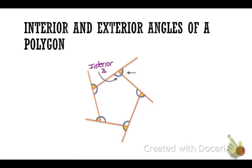The interior angles of a polygon are all of the angles inside the polygon, like the ones that I've highlighted in yellow here.